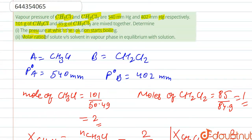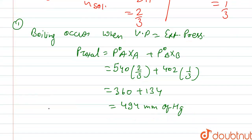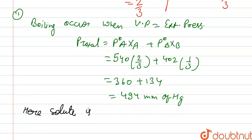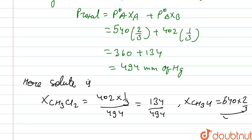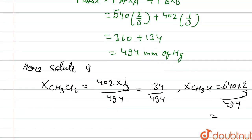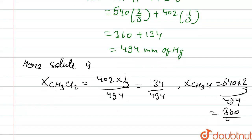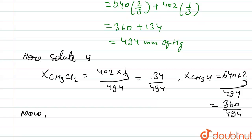The second question is the molar ratio of solute versus solvent in the vapor phase at equilibrium. The solute here is CH₂Cl₂. Using mole fractions in the vapor phase: the mole fraction of CH₂Cl₂ = (402 × 1/3) / 494 = 134/494, and the mole fraction of CH₃Cl = (540 × 2/3) / 494 = 360/494.